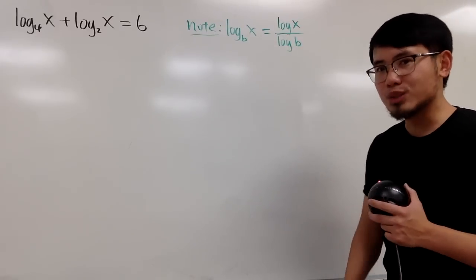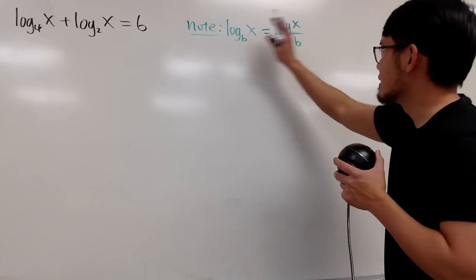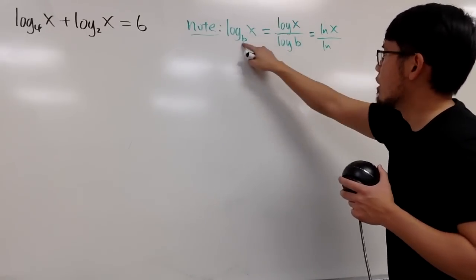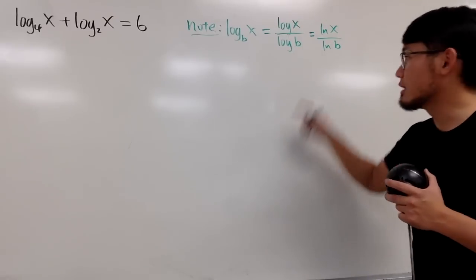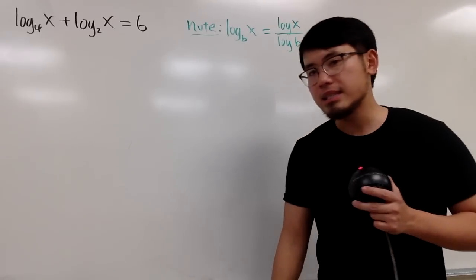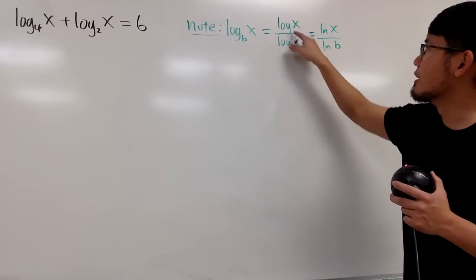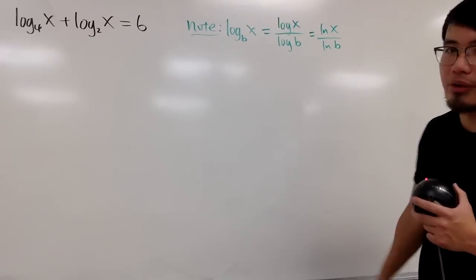Let me just leave it as this, because usually we do have a log key on the calculator, so I usually tell my students this is the same as log of x over log of b. And of course, we like to use the natural log. So, in fact, this is the same as natural log of x over natural log of b. And natural log is, of course, log base e.